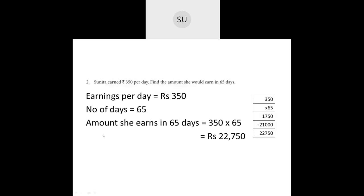Question 2: Sunita earned Rs. 350 per day. Find the amount she earns in 65 days. Her earnings per day is Rs. 350 and the number of days she works is 65. So the amount she earns in 65 days = 350 × 65 = Rs. 22,750. So she earns Rs. 22,750 in 65 days.